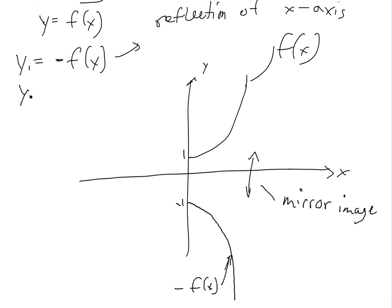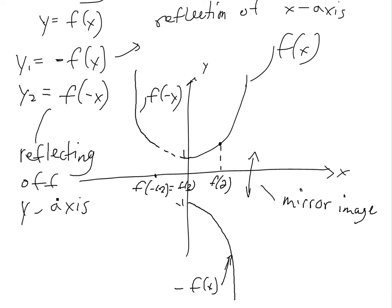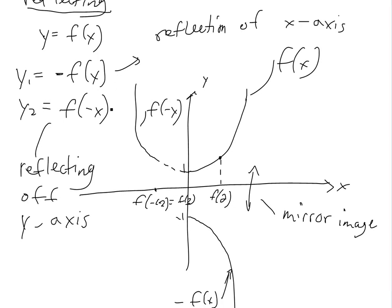And then if we have y2 equals f of negative x, for every value — say this is f of 2 — we're going to take that same value but go to negative x. So f of negative 2 would just equal f of 2. We're mirror imaging it across the y-axis. So this one is f of negative x, which is a reflection off of the y-axis. If the negative is outside, it's the x-axis; if it's inside, it's the y-axis.